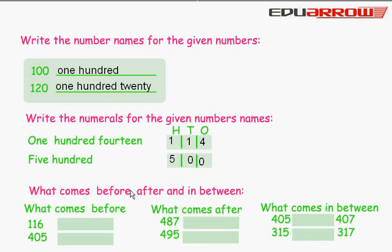What comes before, after and in between. What comes before? 116 - We write here 115. 405 - We write here 404.